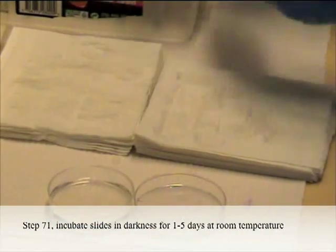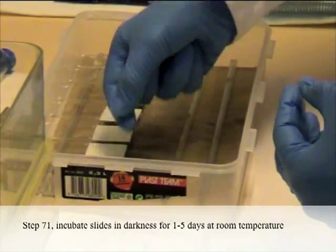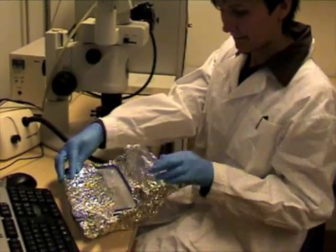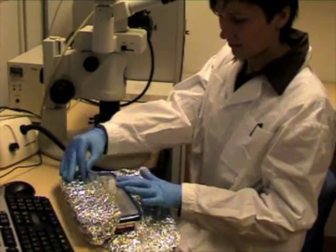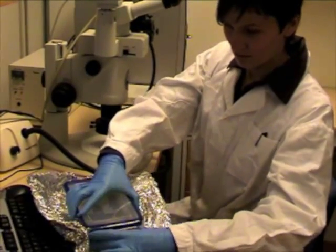Step 71: Incubate slides in darkness for 1-5 days at room temperature. The monitoring of hybridization signals can be done in a stereomicroscope while the slides are still sandwiched. It should be possible to observe purple to brownish stains.